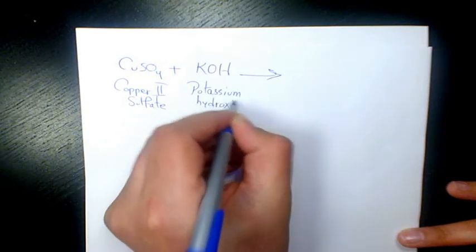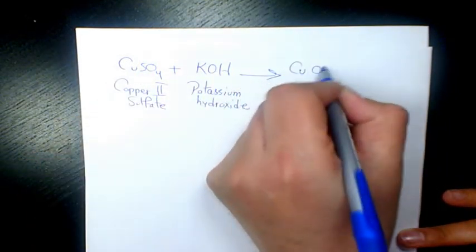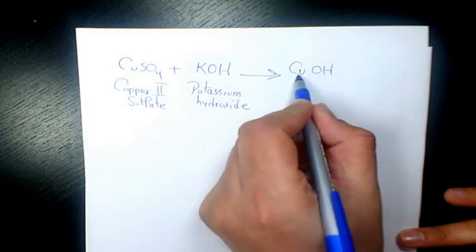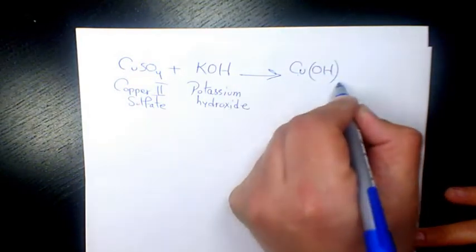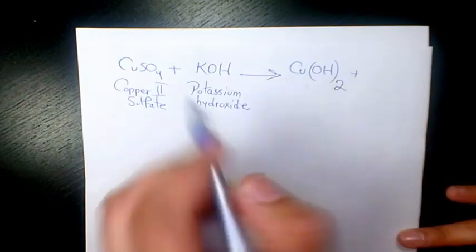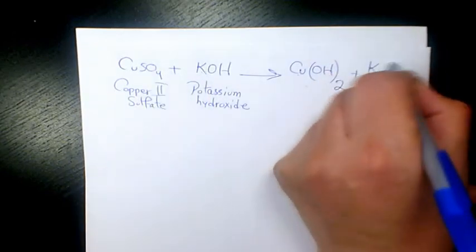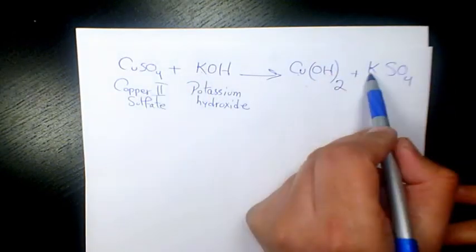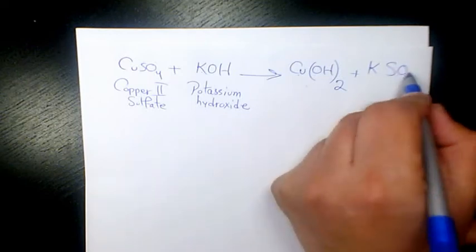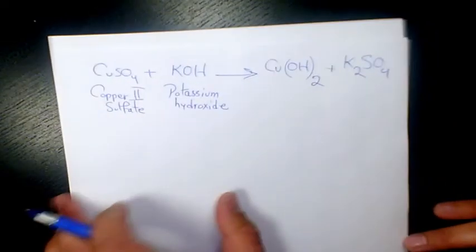So the product is going to be Cu(OH)2, since Cu is 2+ and OH is 1-, I'm gonna write 2 here. And here we have potassium and SO4, so it's gonna be K2SO4. K is +1 and SO4 is -2, so the 2 is gonna come in here.